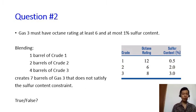Now the second question is if I blend the same amount like in the first question, I will create seven barrels of Gas 3 but it does not satisfy the sulfur content constraint. Is this statement true or false?